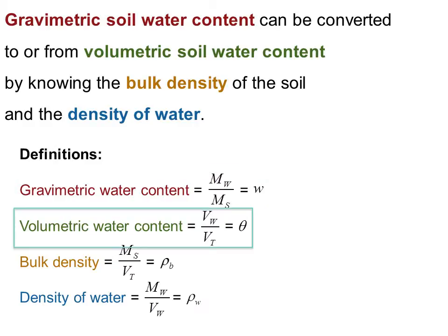Volumetric water content is the ratio of the volume of water in soil to the total volume of soil, and that is denoted by the Greek letter theta.